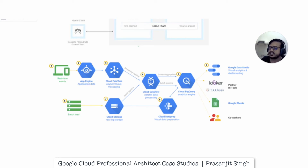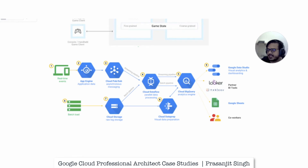Now, what products and services have been identified to help achieve these goals within the Google Cloud ecosystem? We will use Cloud Pub/Sub for integration to ingest real-time event messages sent from a large number of mobile applications. Since this is a mobile game, events will come in from devices and go through Pub/Sub for queuing and message processing.